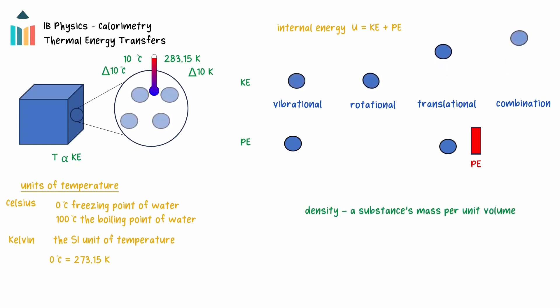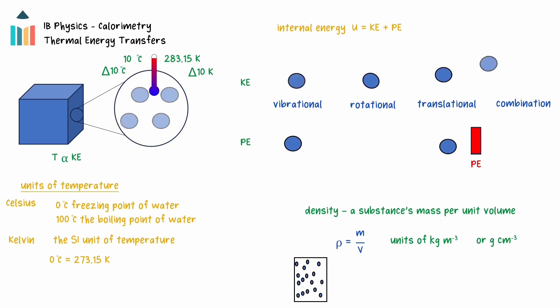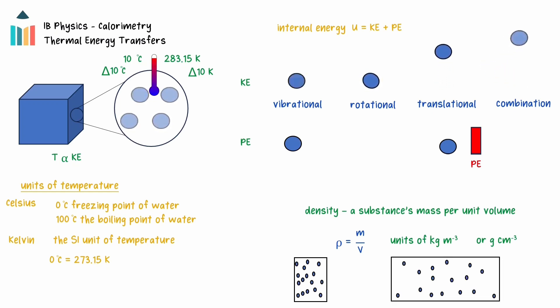The density of a substance is the mass per unit volume. The symbol used for density is the lowercase rho, and it has units of kilogram per meter cubed, or grams per centimeter cubed. Because a gas does not have a fixed volume but will take the volume of the container, gases do not have a constant density. Consider a gas in a container: if the volume of the container is increased, the mass of the gas will remain constant, but the density will have decreased.